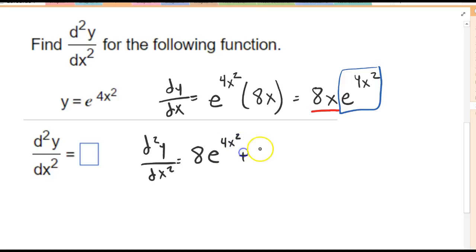plus the derivative of the second one hold the first function, and the derivative of the second one is 8x e to the 4x squared. It's the original function. Derivative of the outside function evaluated at the inside times the derivative of the inside.